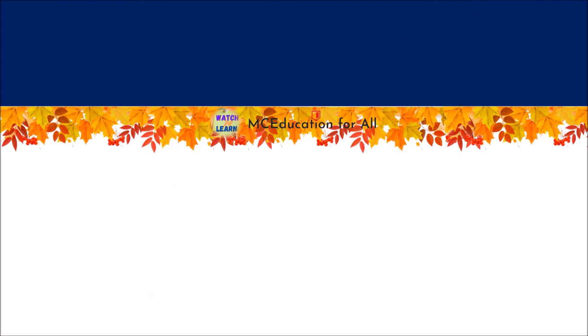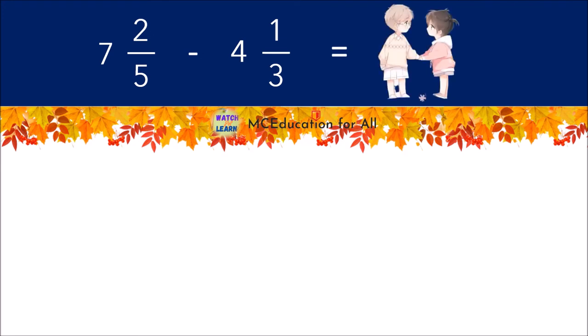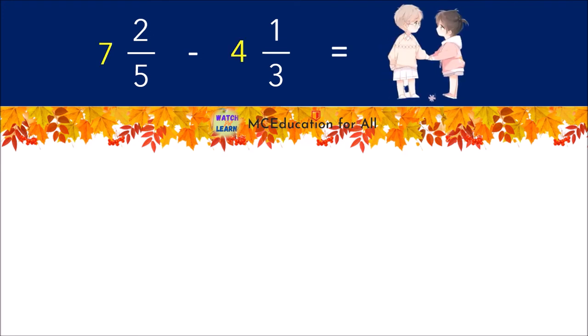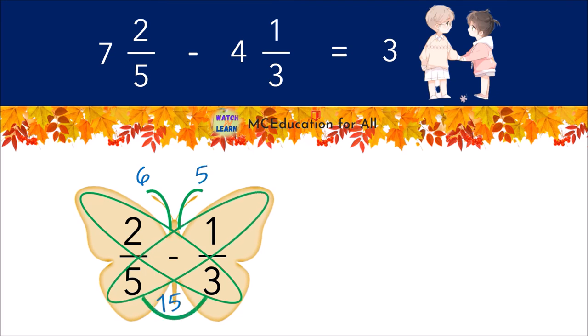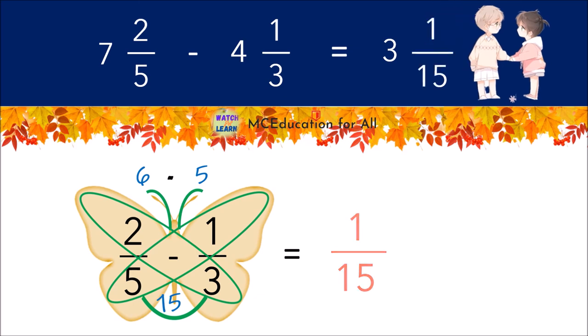Another example: seven and two-fifths minus four and one-third. Seven take away four is three. Apply the butterfly method in two-fifths minus one-third. One is our numerator and fifteen is our denominator. Thus, the answer is three and one-fifteenth.